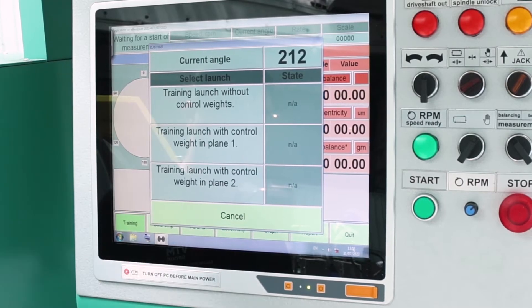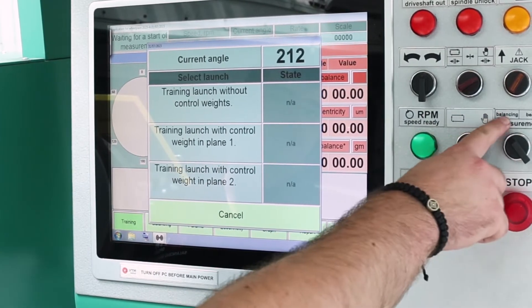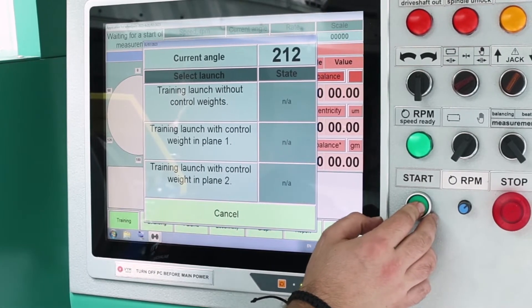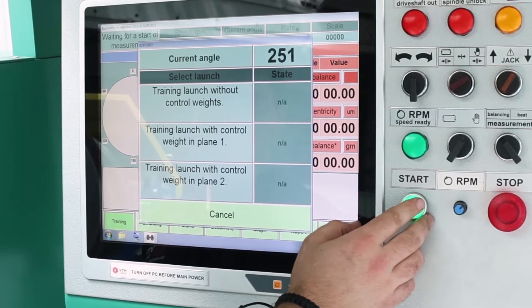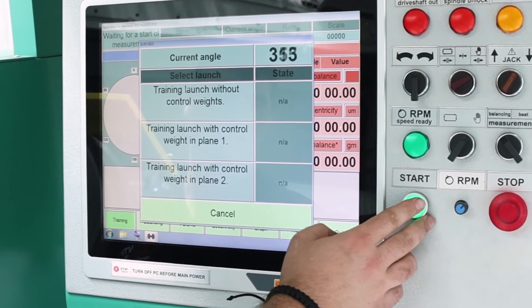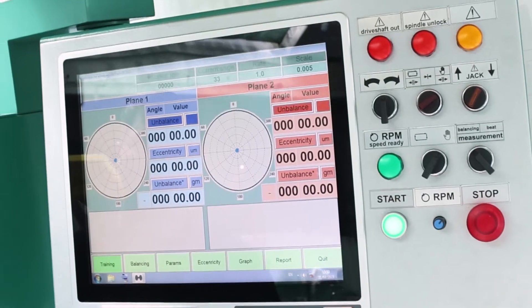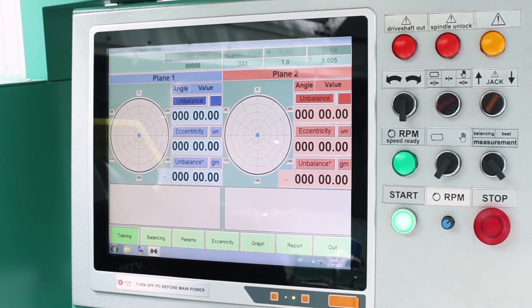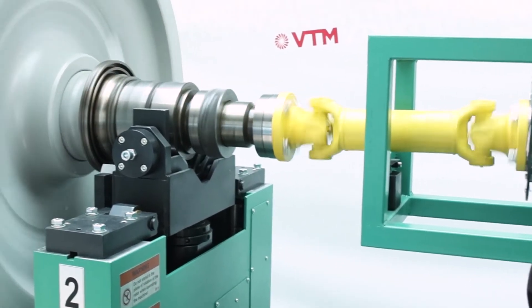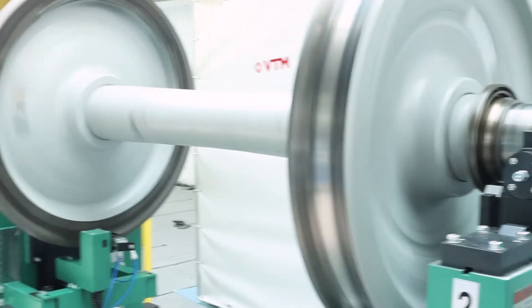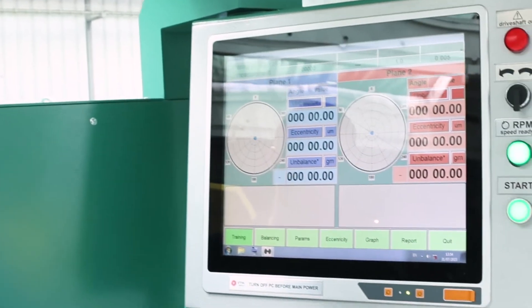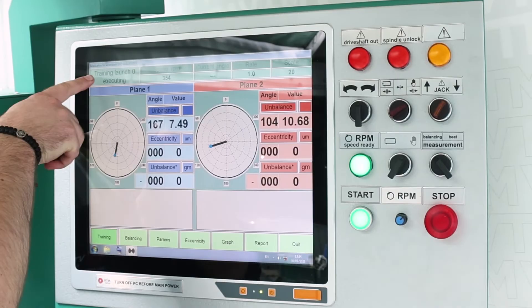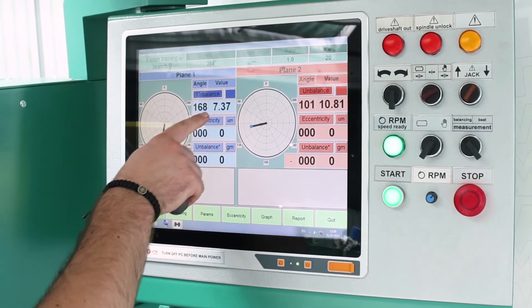Click here, then do three training launches. We check that we are in balancing mode. Press the start of rotation. We select the launch without trial weight. The rotation speed has been reached, the measurement is at zero start. Here we see magnitudes and angles.